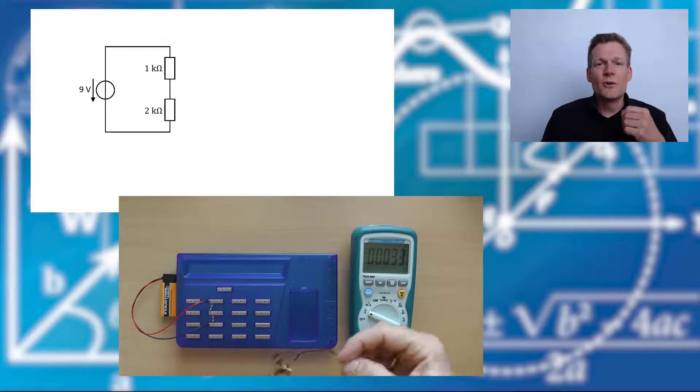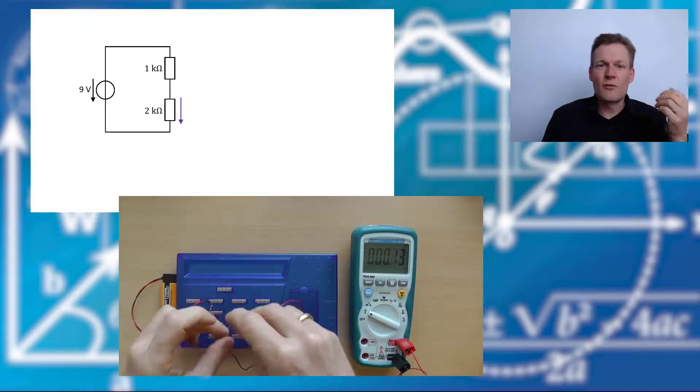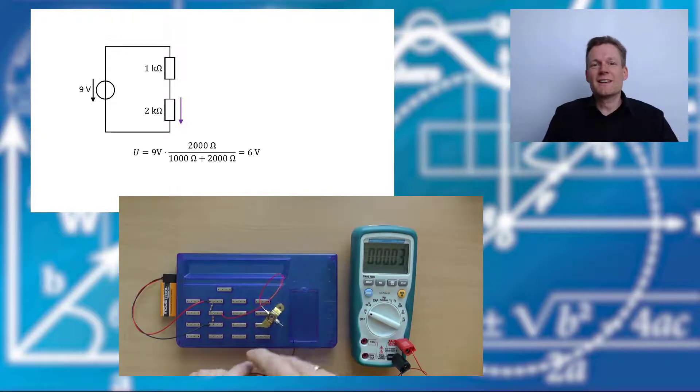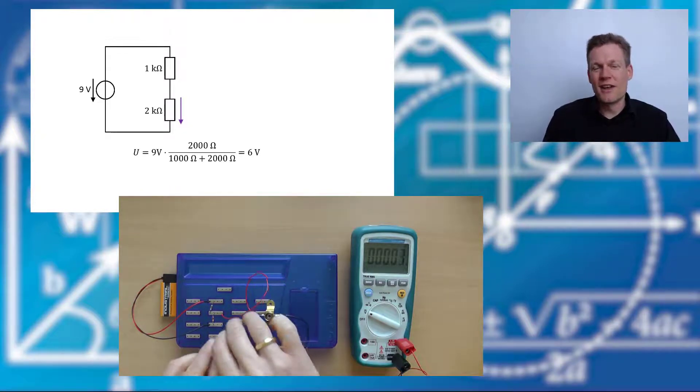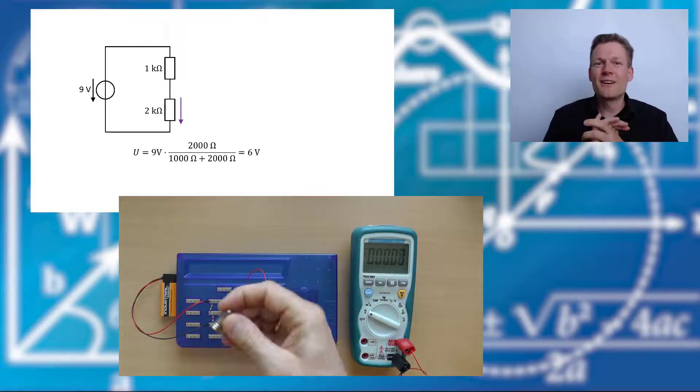So, we know it from our equation. If we calculate this voltage with our voltage divider rule, then we have this expression and it leads to 6 volts. That means, cool, we built a voltage divider and now we have our needed 6 volts.